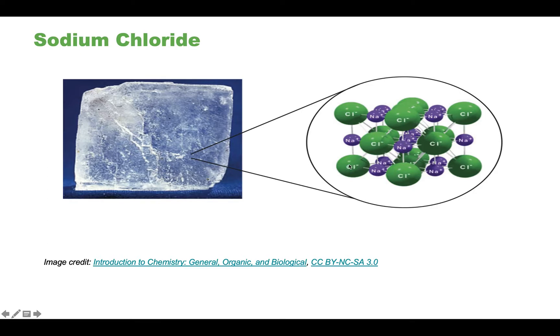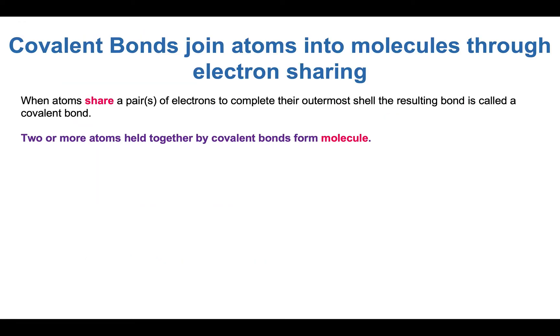Another form of molecular bonds are covalent bonds in which the atoms don't lose or gain electrons but actually they share electrons. When atoms share a pair or more than a pair of electrons to complete their outermost shell, the resulting bond is called a covalent bond. When molecules come together as a covalent bond they form a molecule.